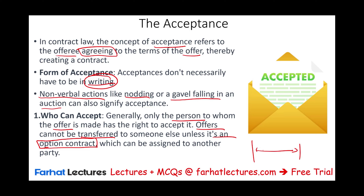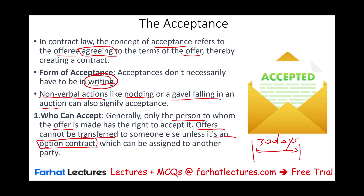Who can accept? The party to whom the offer is made has the right to accept it. Offers cannot be transferred to someone else unless it's an option contract. An option contract is when an offeror makes an offer and says, I'm going to hold it for 30 days. But they don't have to hold it unless you pay them some consideration to hold it. That consideration creates an option contract. If there's an option contract, then that option contract can be transferred to a third party.